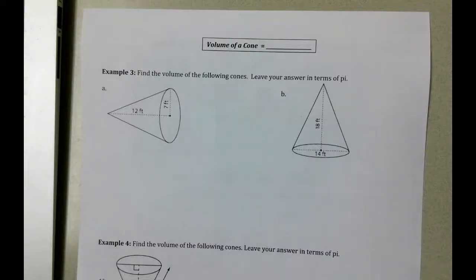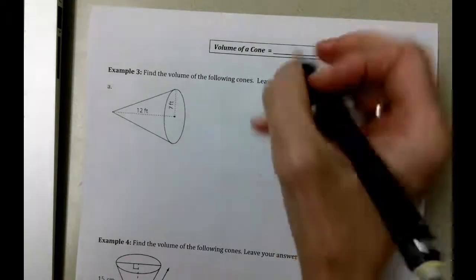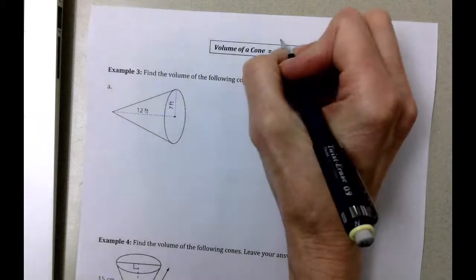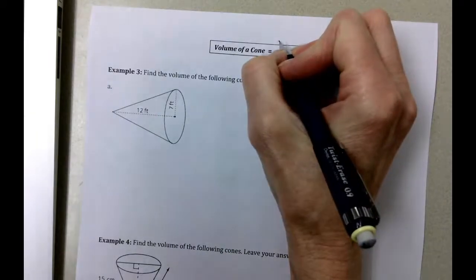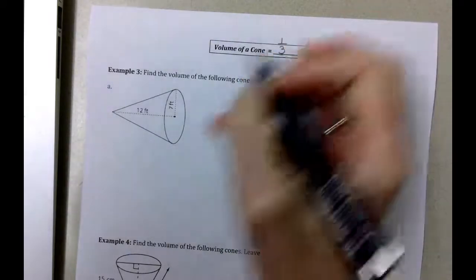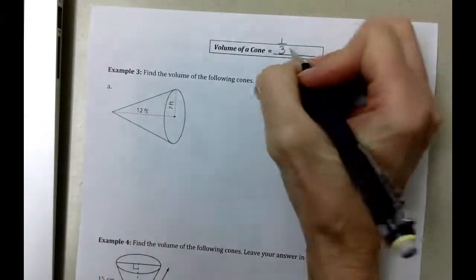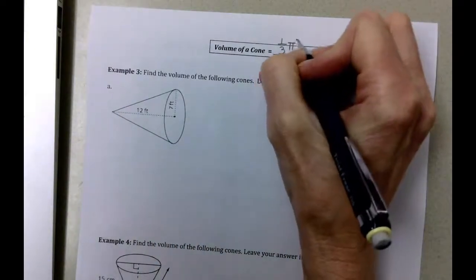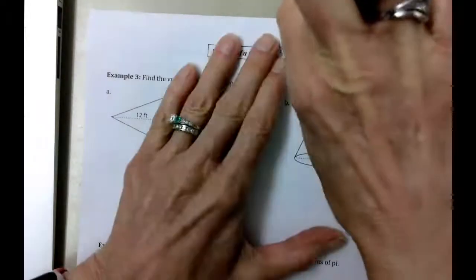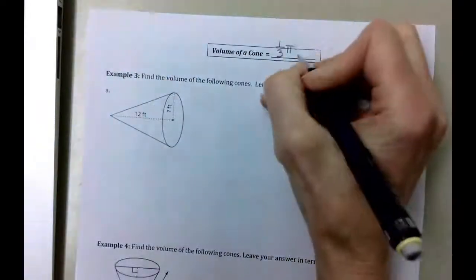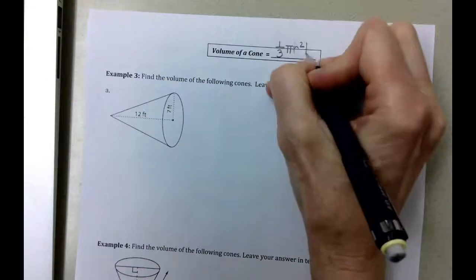The other type of figure that we're working with today is the volume of a cone. If you look at your green paper once again, you'll see that the volume of the cone is going to be one-third. We've got a circle for a base, so the area of the circle is pi r squared, times h.